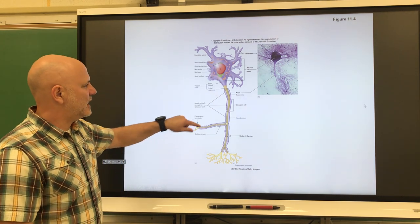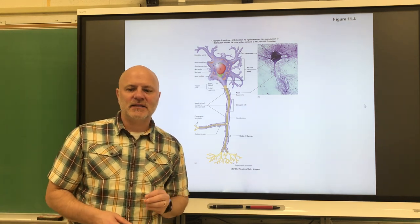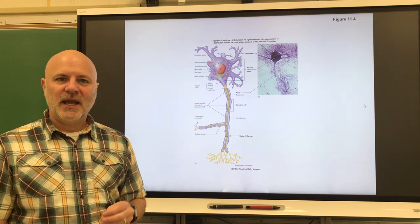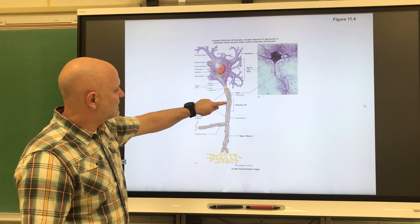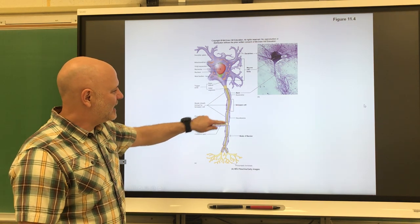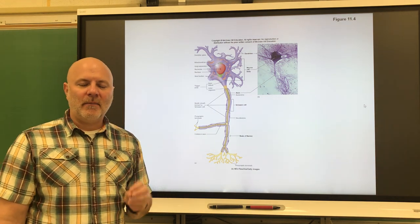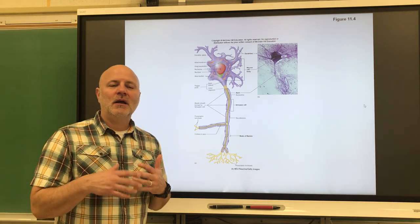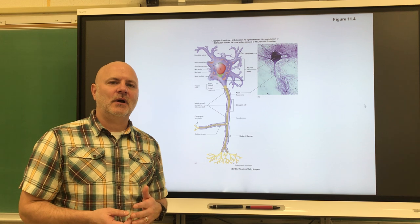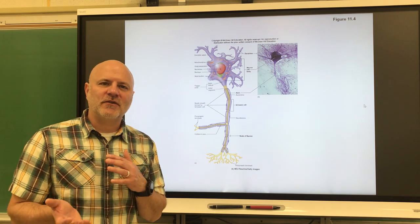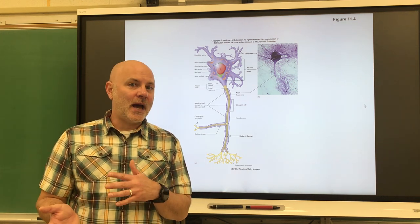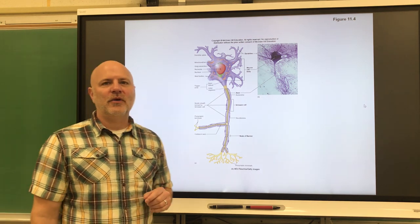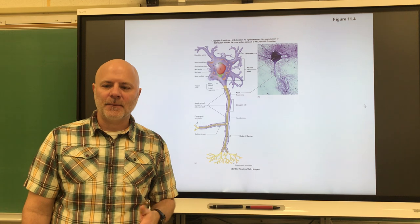Next is the axon — an extension off of the cell body that sends an impulse. There is only one axon per neuron, and it's usually myelinated. The white stuff you see here — called a Schwann cell — that is myelin, an insulating cover around an axon. If you've ever heard of white matter and gray matter in our brain and spinal cord, white matter is where axons are covered with myelin, and gray matter is where they are not.